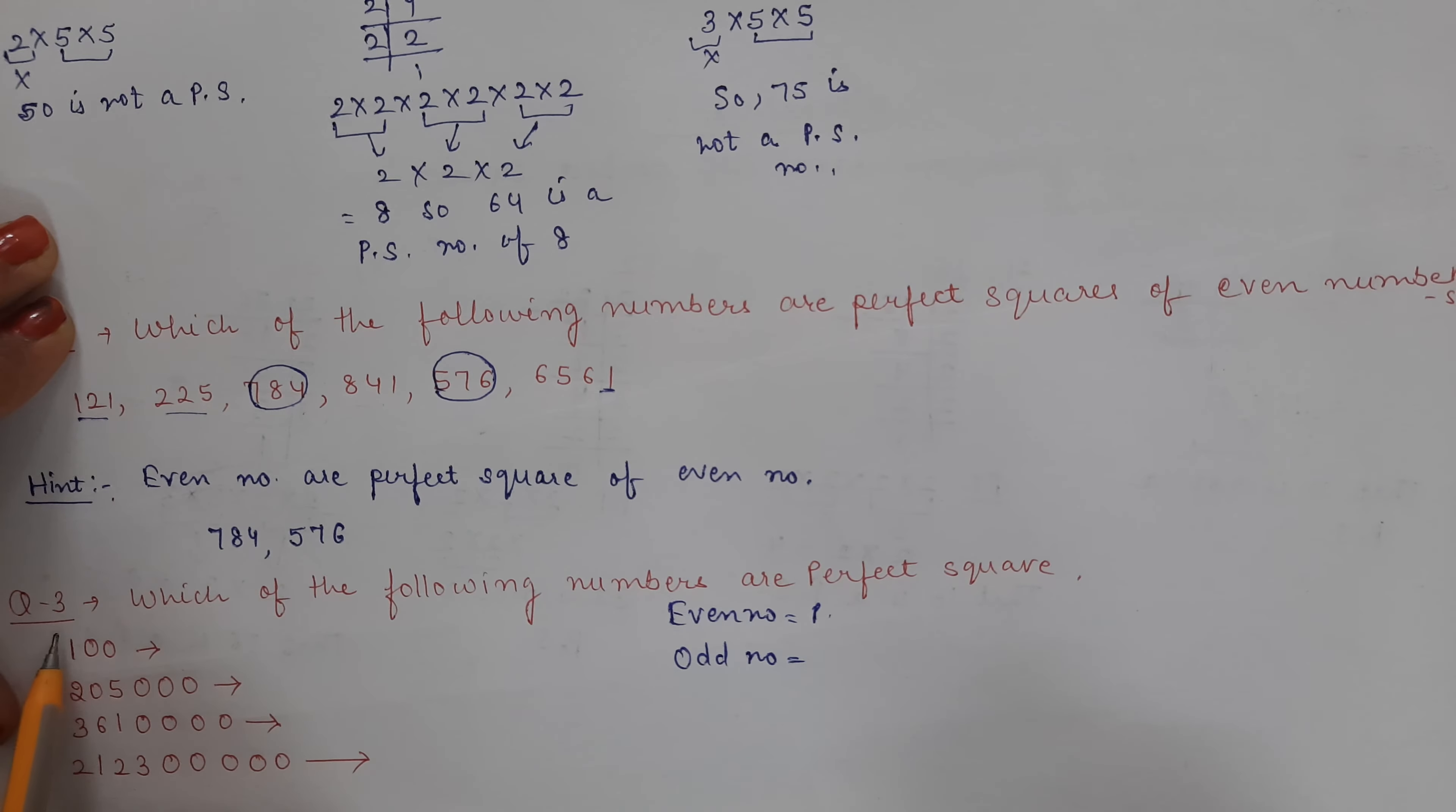Hello everyone, this is question number three from worksheet one. It asks which of the following numbers are perfect squares. These numbers have been given. Let's see. There are zeros in the end.